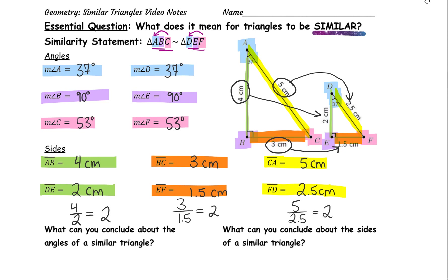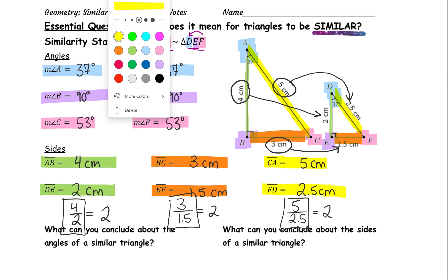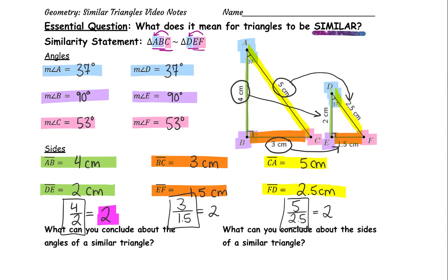Yes, the side lengths of the bigger triangle are twice as long as the side lengths of the smaller triangle. This means that the side lengths are proportional, because when I put them into fractional form — big over small — I end up getting the same scale factor, the same answer.